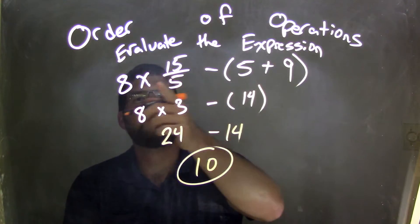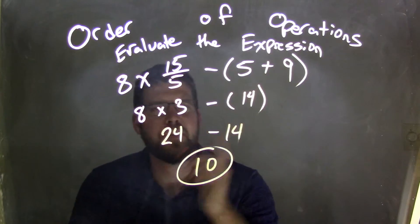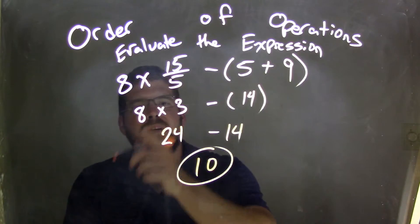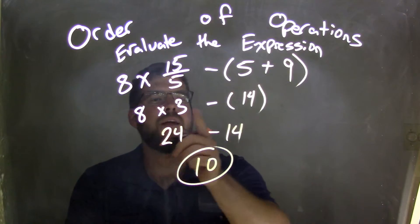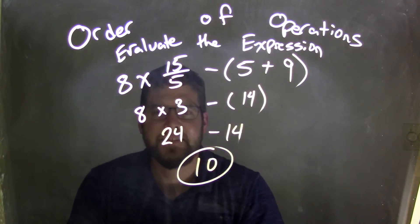Quick recap: we have subtraction, multiplication, and parentheses with addition. I dealt with the parentheses first. Once I did that, I divided 15 divided by 5 into 3. Then 8 times 3 gave me the 24, and then brought the negative 14 down. 24 minus 14 is that 10.